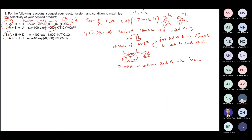So when you equate like this, you already cancel RD over RU since you have CA and CB — you already cancel them. So it means CA is equivalent to CB. So you cannot analyze in terms of concentration anymore, but you can analyze in terms of temperature right now.